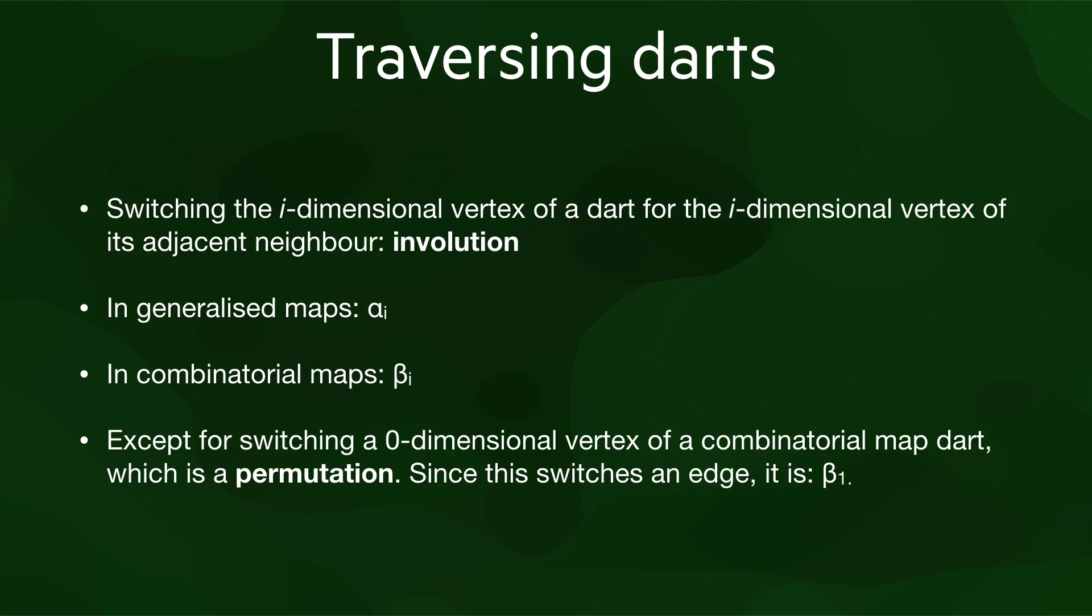However, there is an exception here. Switching the zero-dimensional vertex of a combinatorial map dart is not an involution because this operation just means moving to the next edge on the loop of darts around a face. Because if we keep doing this operation, we eventually end up in the same dart, it is instead known as a permutation. And because this operation switches the edge where we are, it is not known as beta 0, but instead as beta 1.